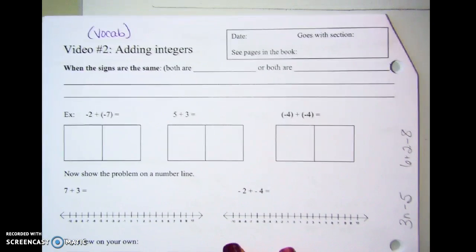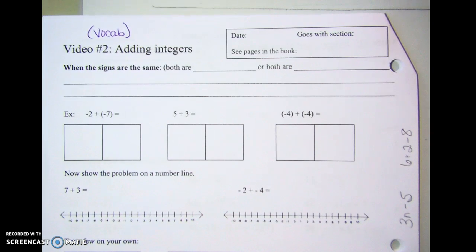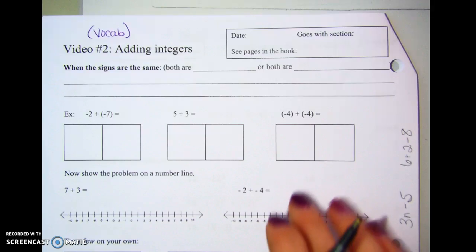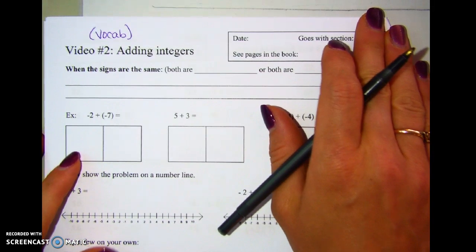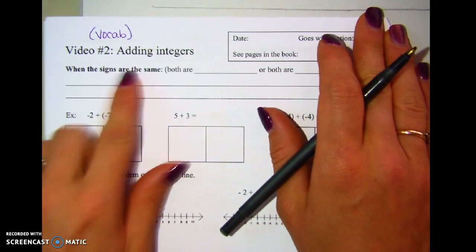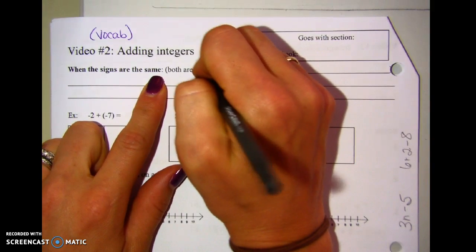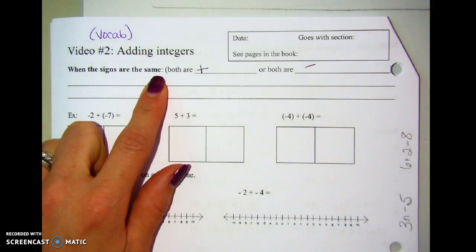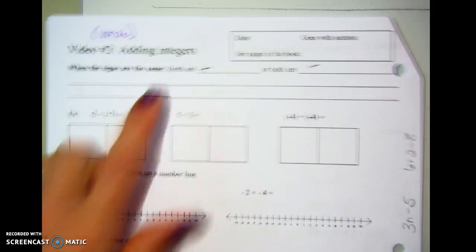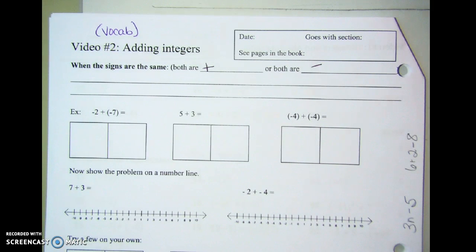Now we're on your actual note packet, and I'm just going to take my notes on here and you can follow along. We've already talked about vocab, and we're ready to fill these in. We're going to start with adding integers when the signs are the same — so when they are both positives or when they are both negatives. These are the rules.